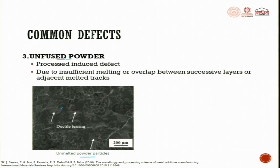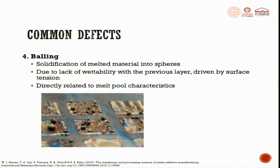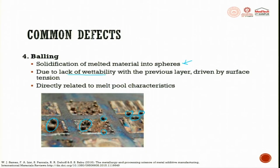These are unfused powders. Next, balling - you can see these are all balling. Solidification of melted material into spheres occurs because of surface tension, viscosity, and temperature-related phenomena. Due to lack of wettability with the previous layer, driven by surface tension, balling occurs - from one layer to the other if you have a problem with wettability.